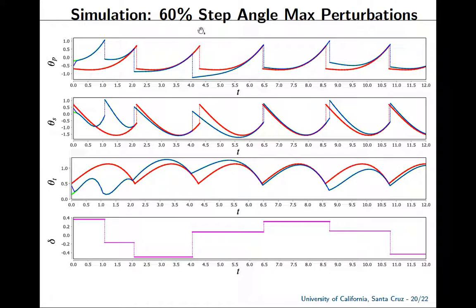In this simulation we have up to 60% step angle perturbations — similar to the last slide but with much larger perturbations. On the first step we again have convergence with the virtual system, then convergence with the reference system. We continue attempting to keep as close a convergence with the reference as possible given these perturbations, and sometimes even when we have a very large variation, we're still able to continue to correct for it.